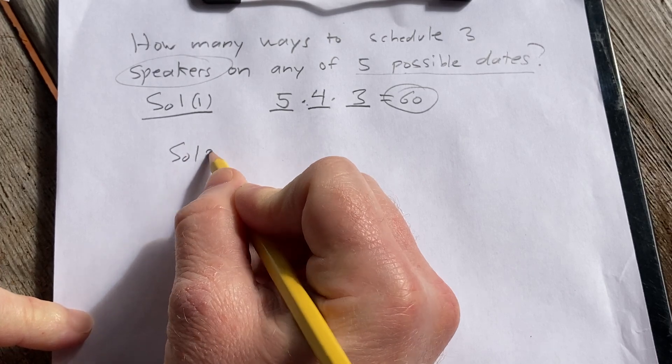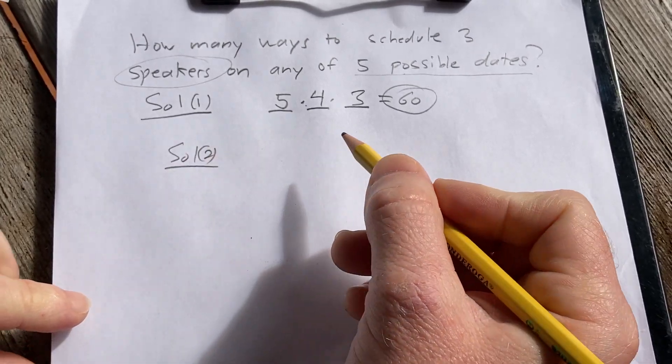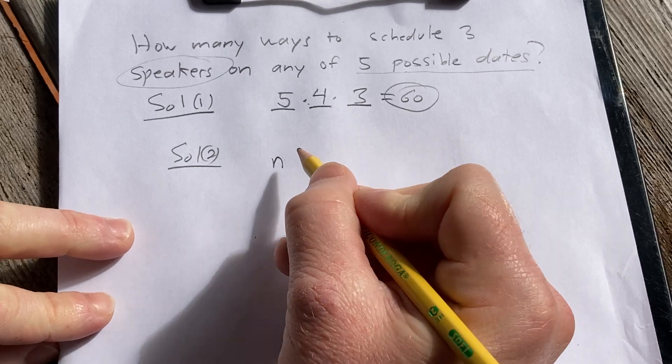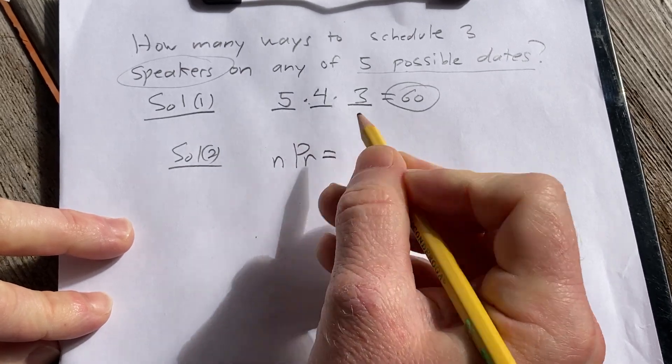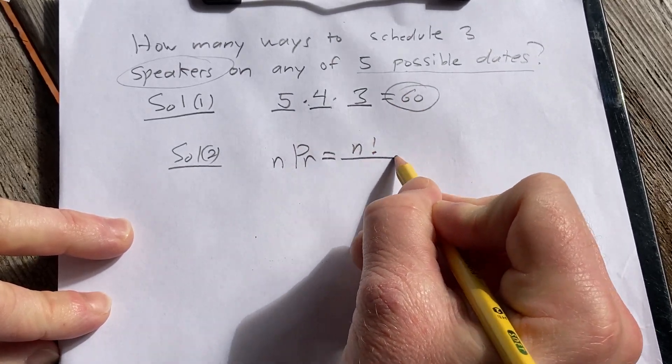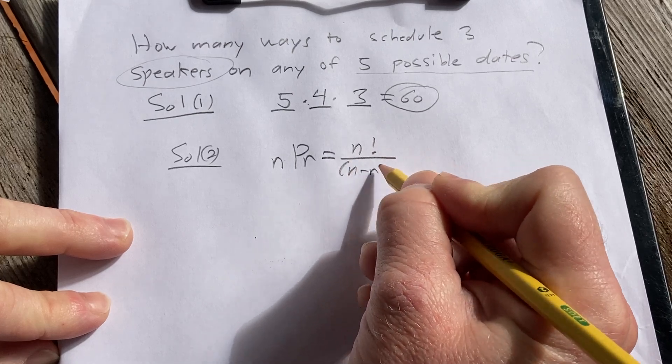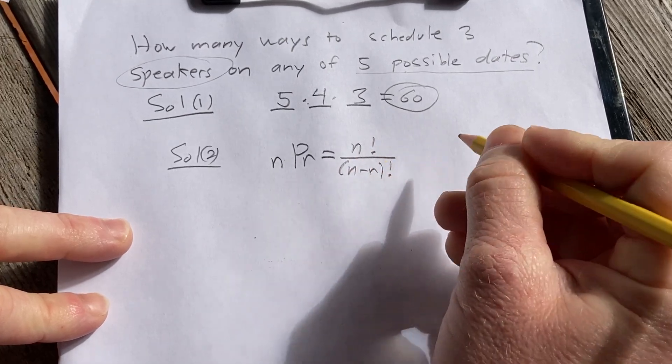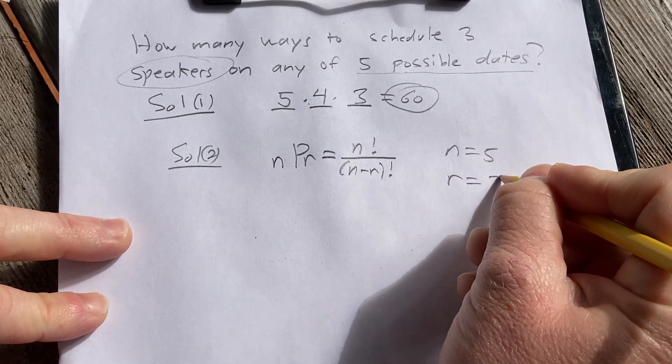Solution two is one that often people prefer, there's a formula. So the formula is nPr, that's equal to n factorial over n minus r factorial. And then here n is 5 and r is 3.